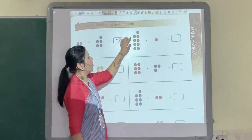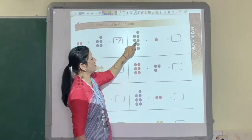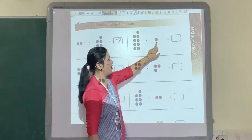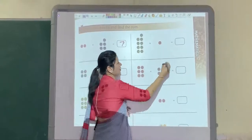One more example I will show you. 1, 2, 3, 4, 5, 6, 7, 8, 9. So here are 9 bindis. Plus 1 bindis. So 9 plus 1, 10. So the answer is 10.